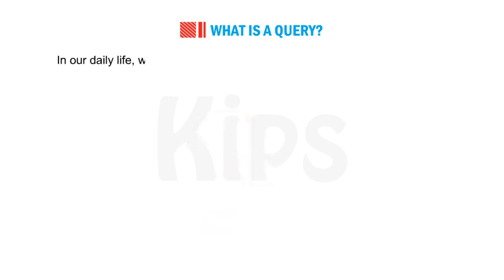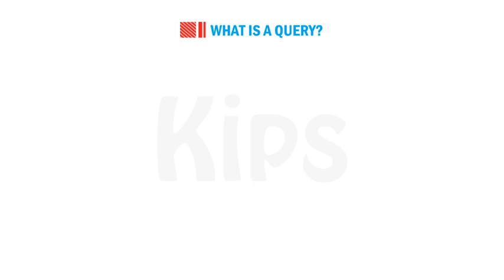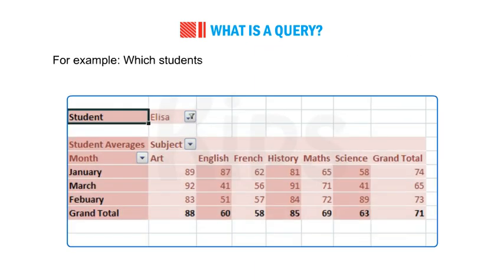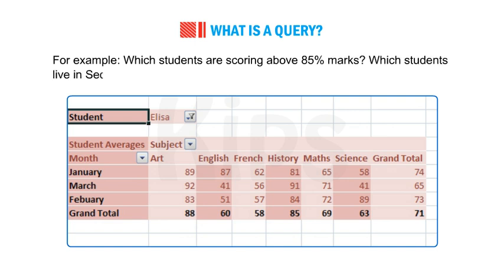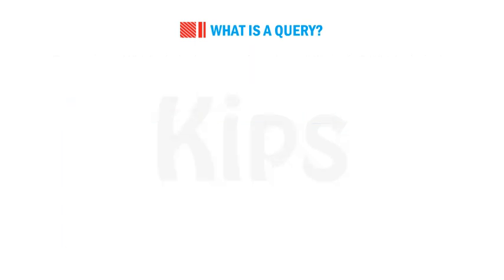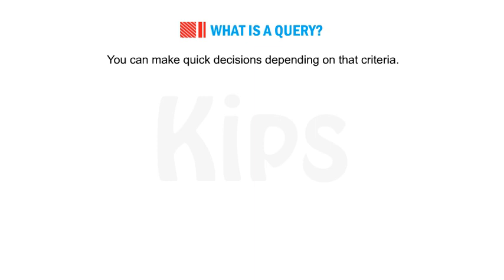In our daily life, we make several types of queries to get specific information. For example, which students are scoring above 85% marks, which students live in Sector 4, Chandigarh, and so on. You can make quick decisions depending on that criteria.